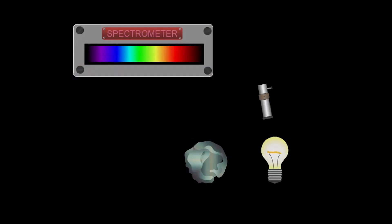This simple animation allows us to simulate a telescope and spectrometer apparatus with a lightbulb and a cloud of gas in space, and observe the three types of spectra.